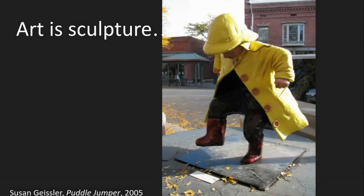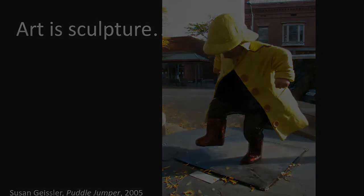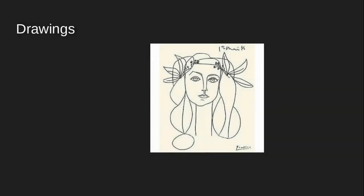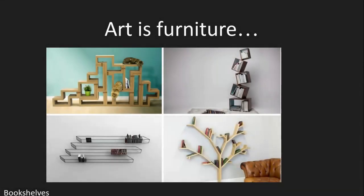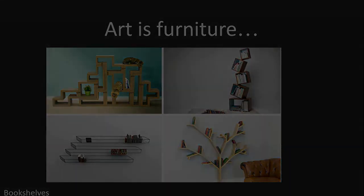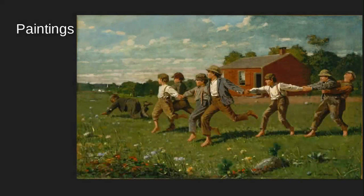This is a huge sculpture of a little boy playing in a puddle. Art can be drawings, like this crayon drawing by the famous artist Pablo Picasso. Art can be furniture — look at all these cool bookshelves made in all different kinds of ways. Art can be paintings. These boys are playing crack the whip. Cool.